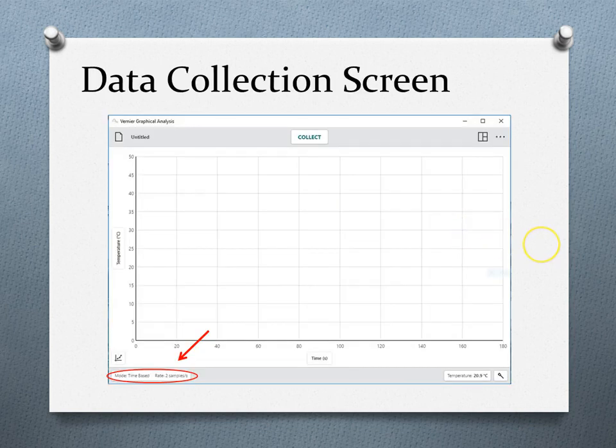Once you plug in your GoLink with the USB interface, this screen comes up. Nothing will start collecting until you click collect. But before you collect, you want to come down to the bottom where it says mode and click on the mode button.